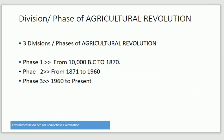Agriculture Revolution ki teen phases hain. Phase 1 is from 10,000 BC to 1870. Phase 2 is from 1871 to 1960. And Phase 3 is from 1962 to the present age.